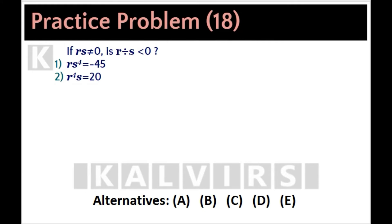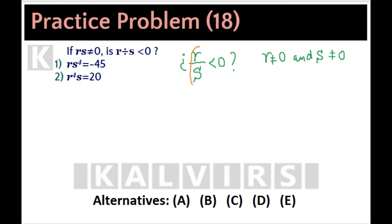If R times S is not 0, is R over S less than 0? The question stem states that neither R nor S are 0, and they want to know whether this quotient is a negative number or not.